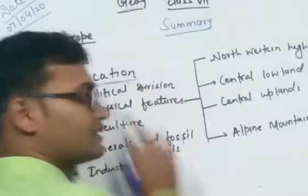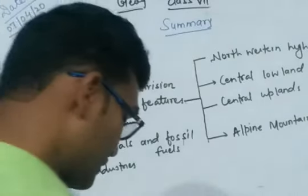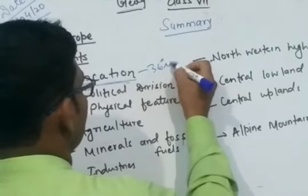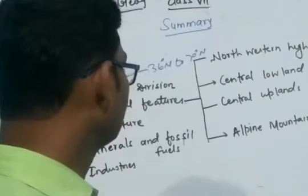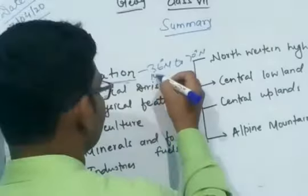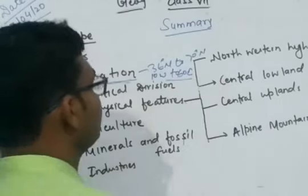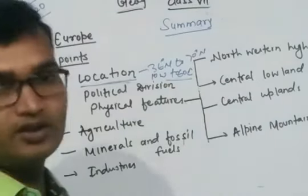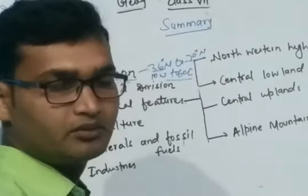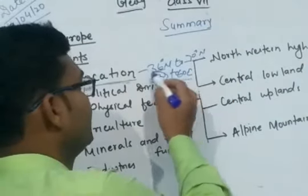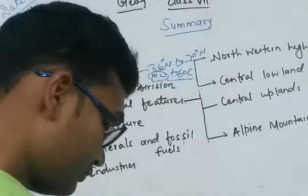Europe extends from 36 degrees north latitude to 70 degrees north latitude. Longitudinally, most of Europe lies in the eastern hemisphere, with only some part in the Western Hemisphere up to about 10 degrees west.